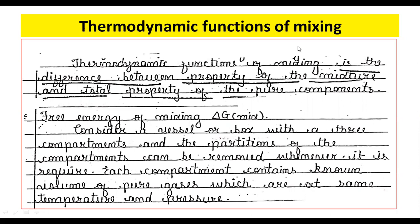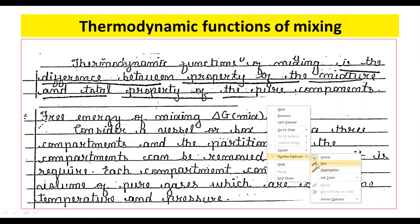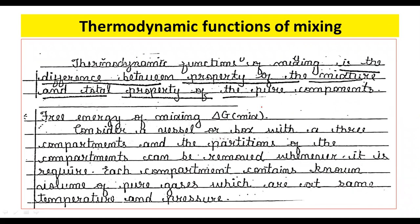Let us first look at the free energy of mixing, denoted by delta G. It is the difference between the free energy of the mixture and the free energy of the pure components.